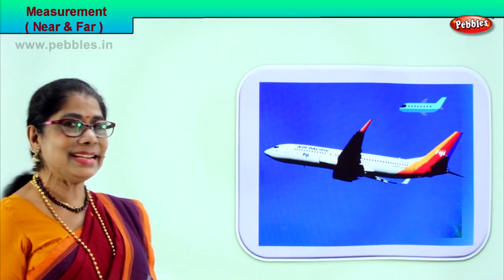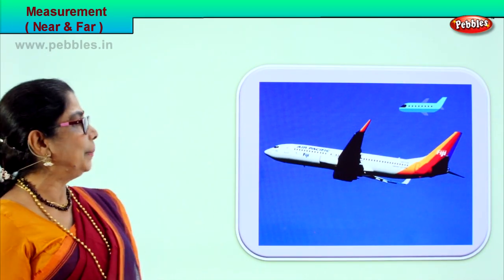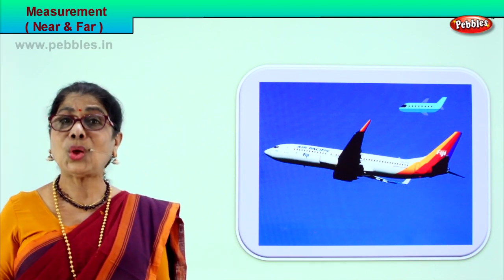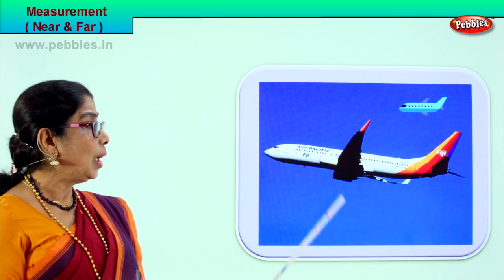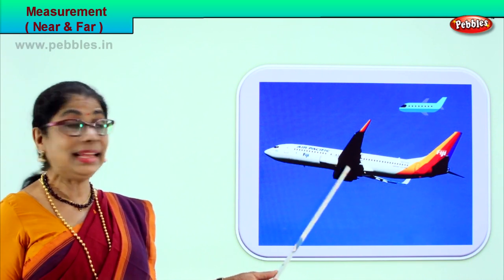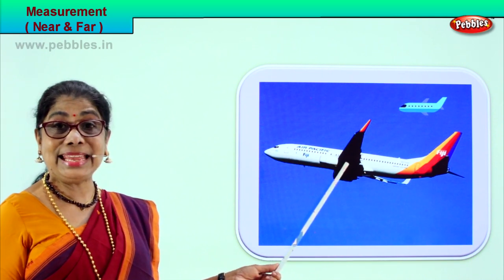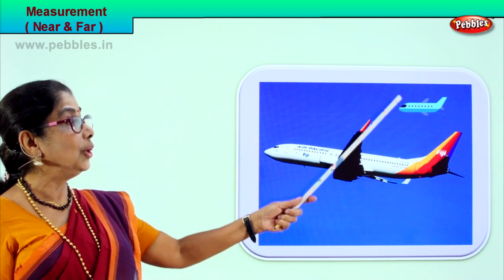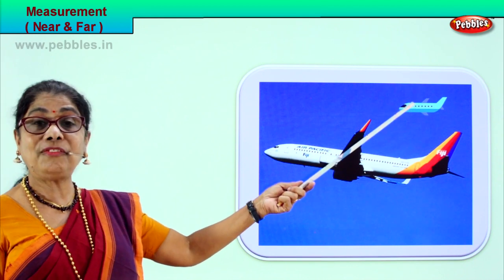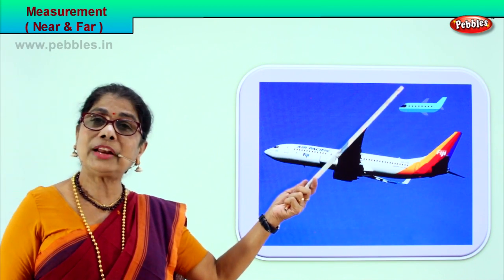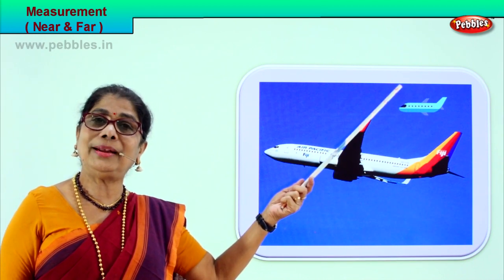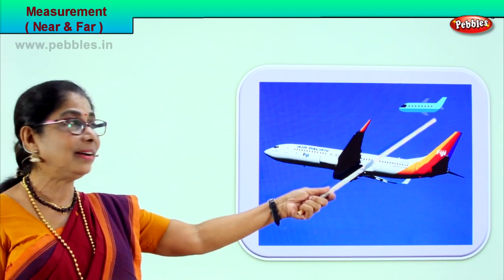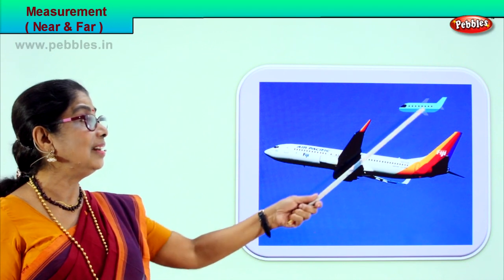Look up in the sky — there are airplanes flying by. One is flying low and close, so we say this airplane is near. You can see it so clearly. But look at that airplane flying high — so far away it looks so small. Near and far — near and far.